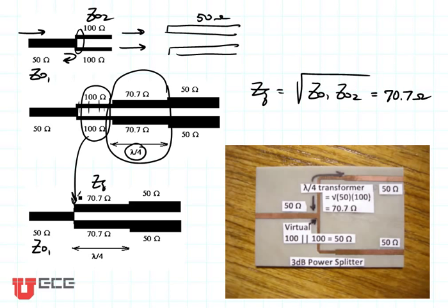So here's my input. That is my Z01 of 50 ohms right here. I have a virtual 100 ohm line right here, but I've never built it.